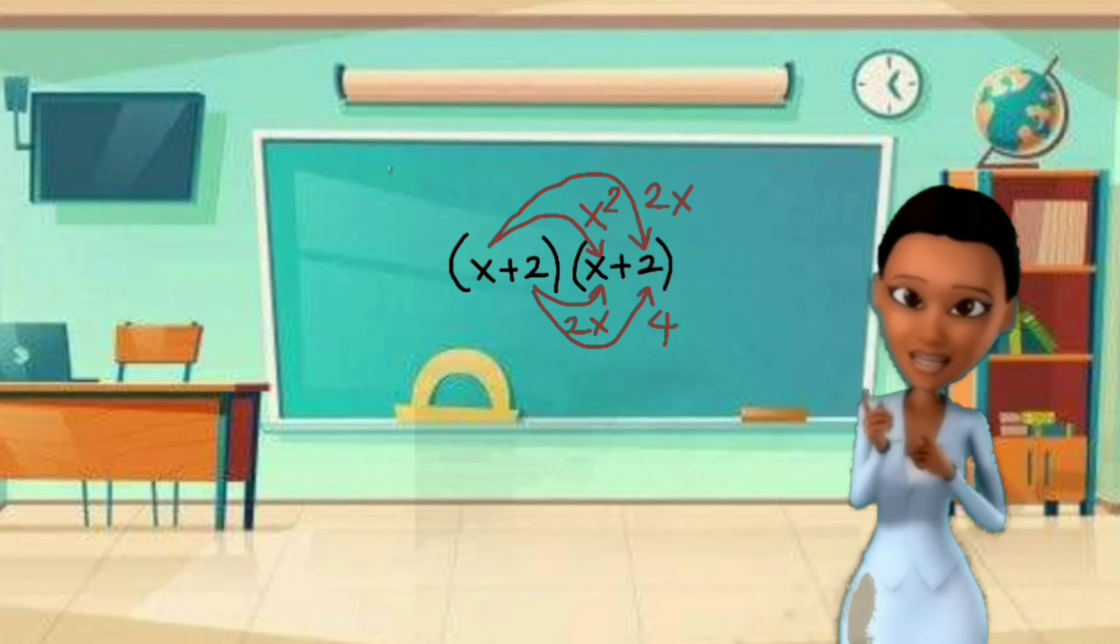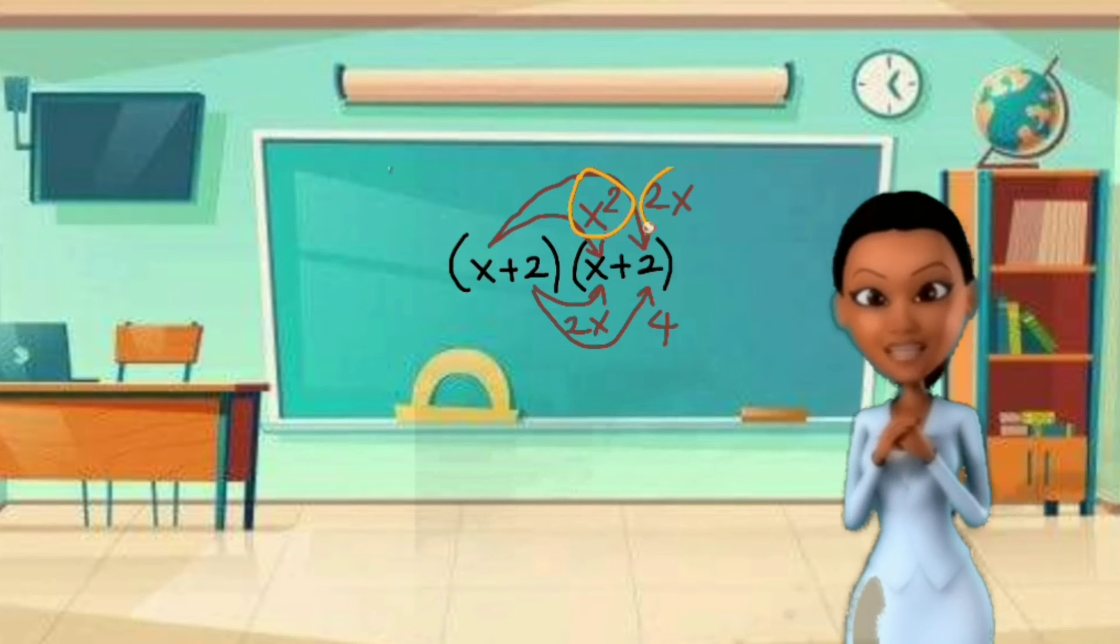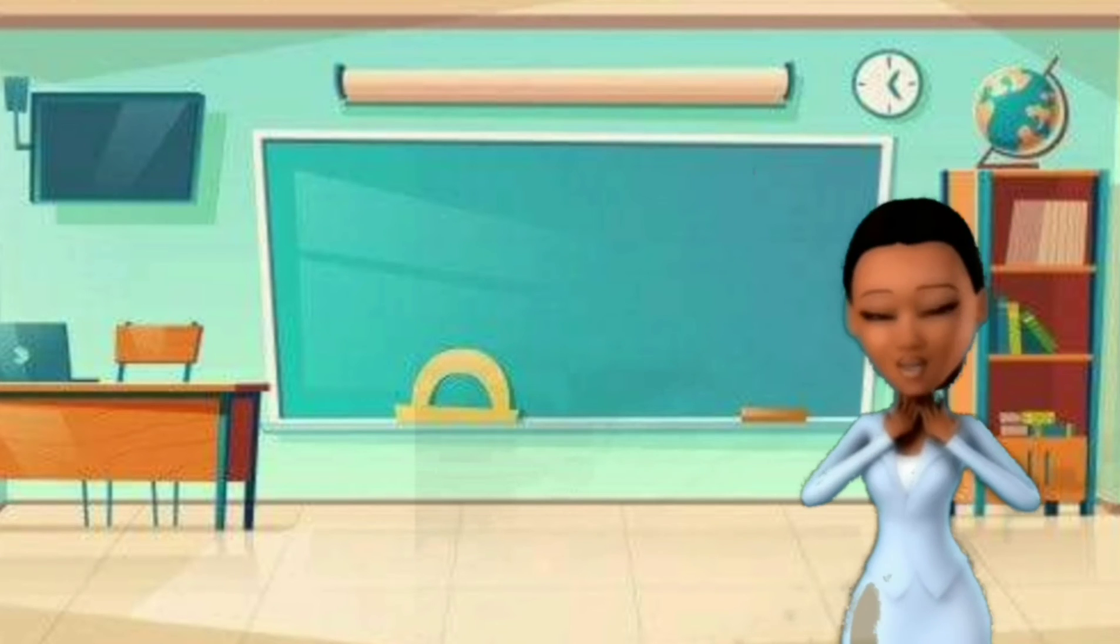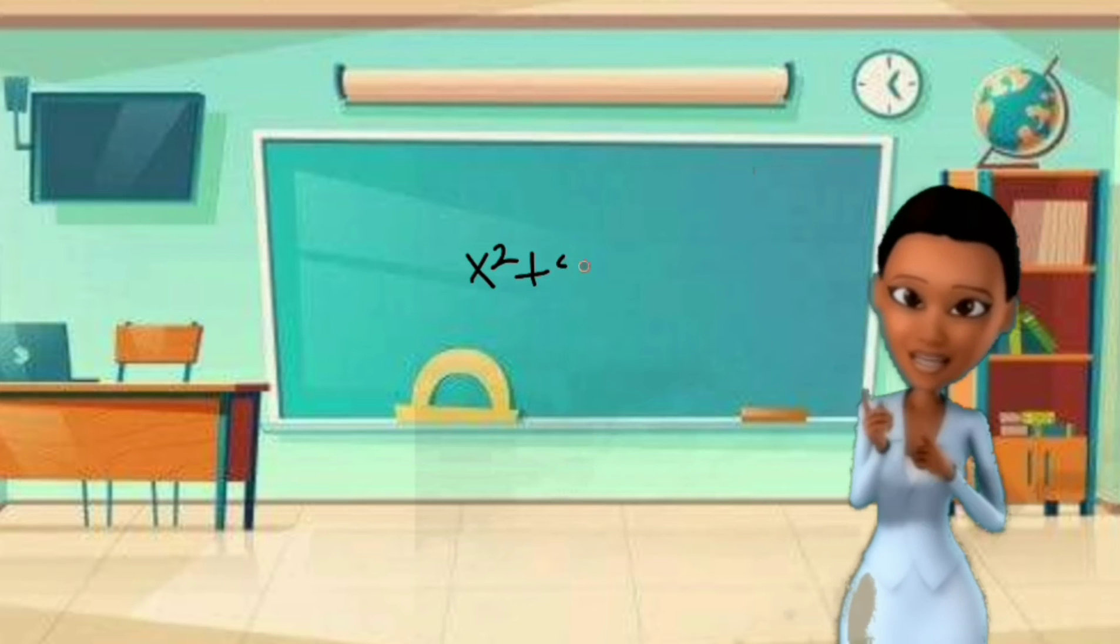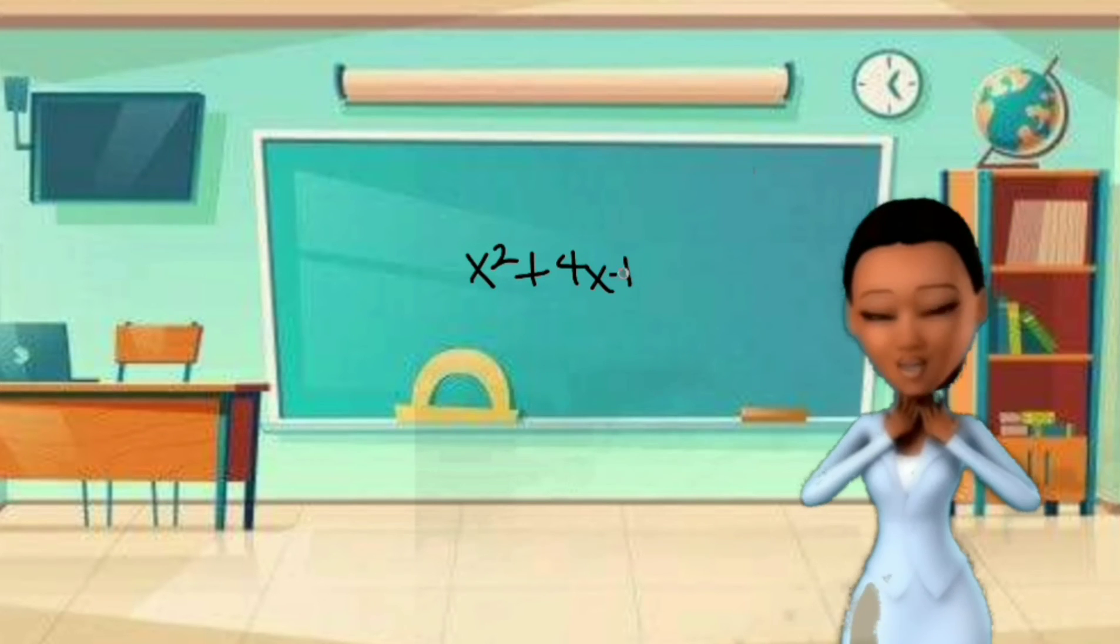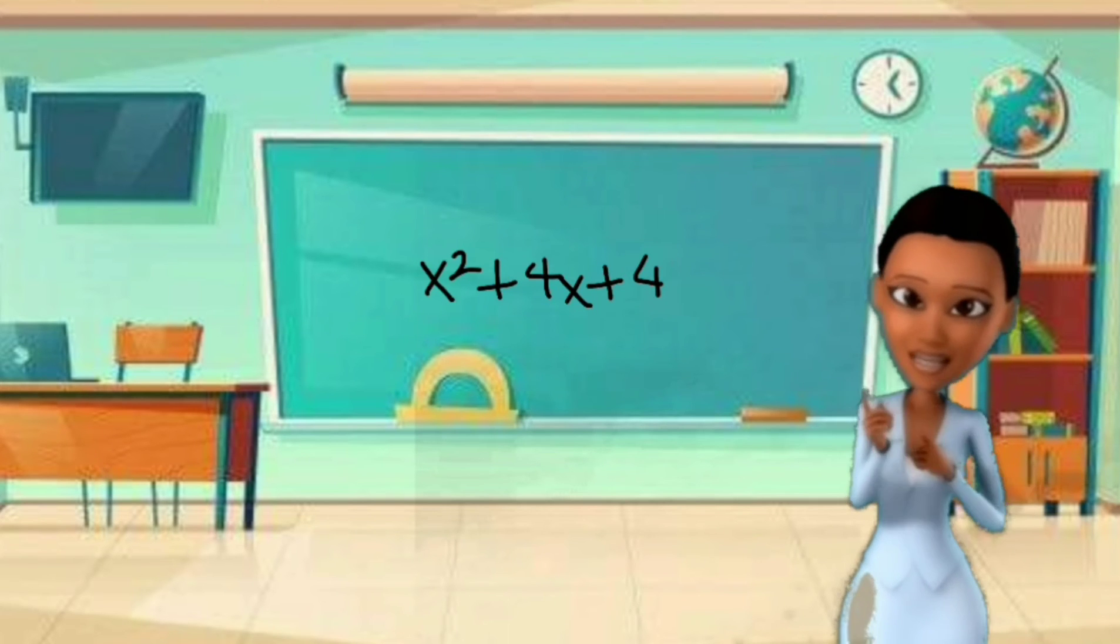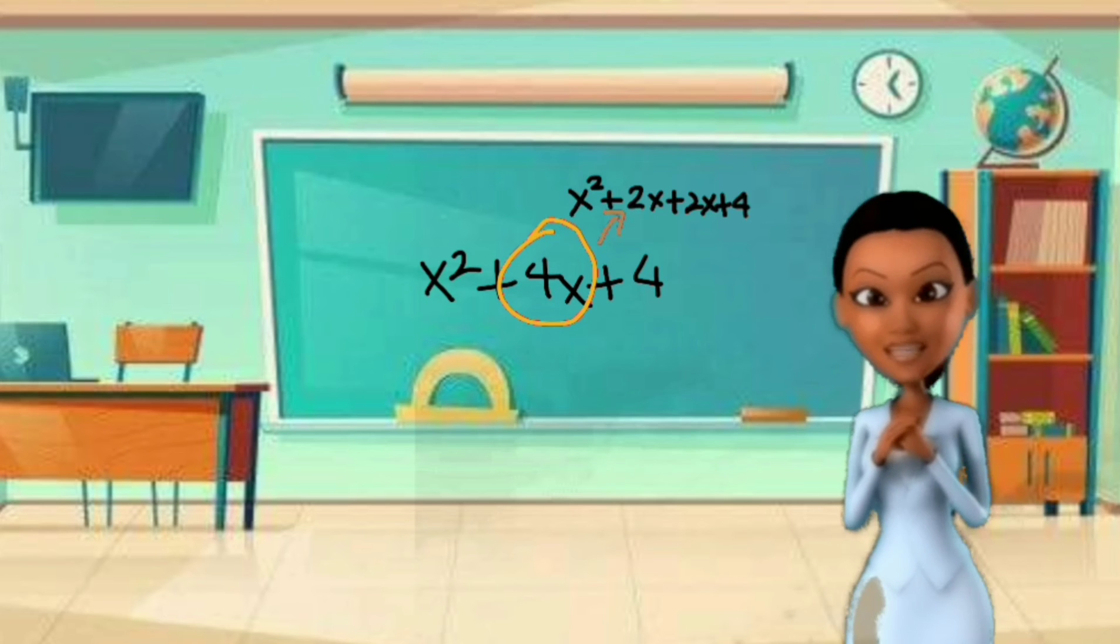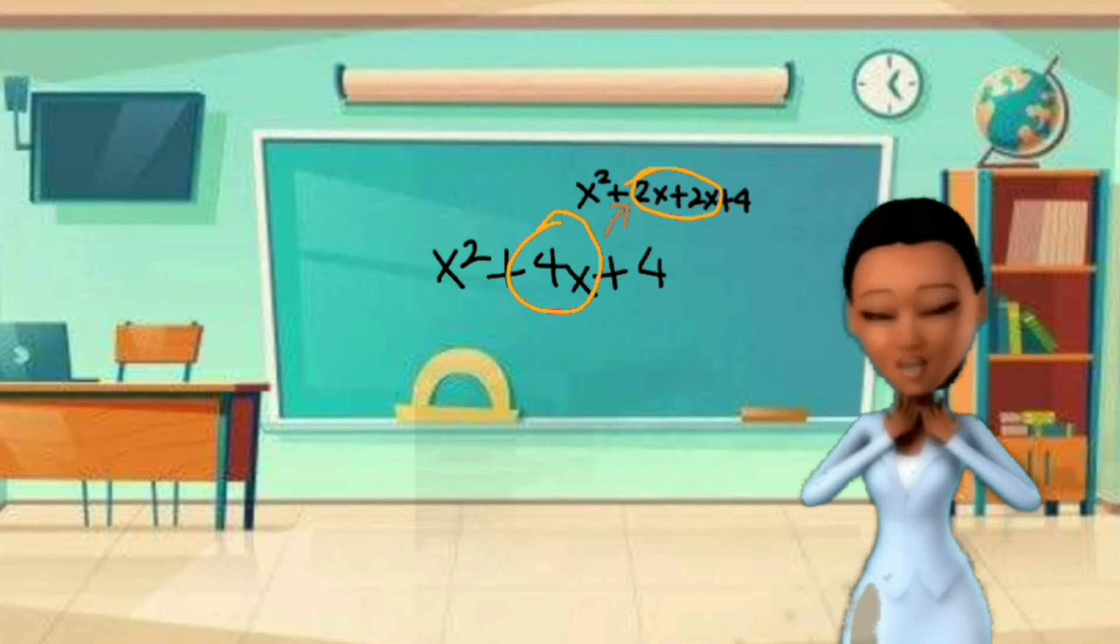In order to come up with a product of this binomial, we have to combine the terms. So we have x squared plus 4x plus 4. Maybe you will wonder, where did I get it? It is the result when you combine 2x by itself.